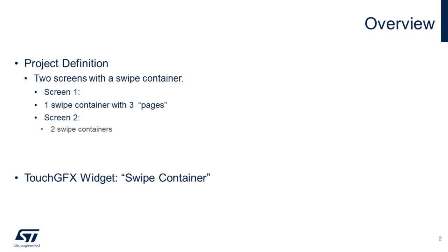The project will have two screens. The first screen will have three pages. The second screen will have two swipe containers, each one with two pages. The swipe container is useful to have fluid transitions and to have multiple spaces at the screen. Each page is like a screen inside the swipe container that we can change by swiping the screen.